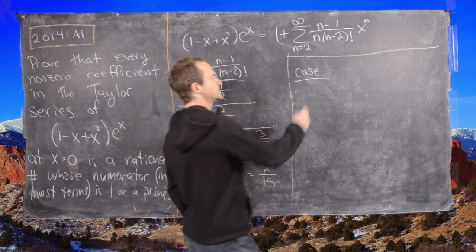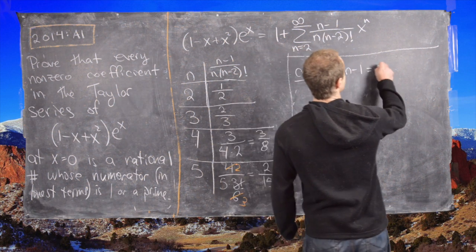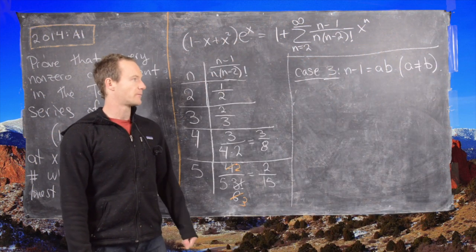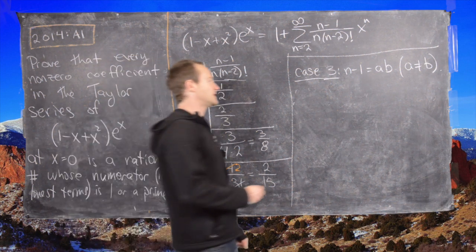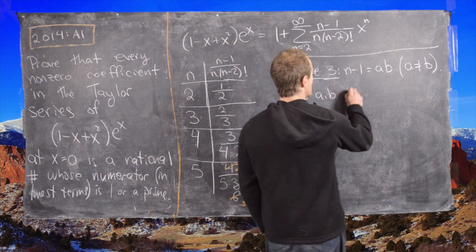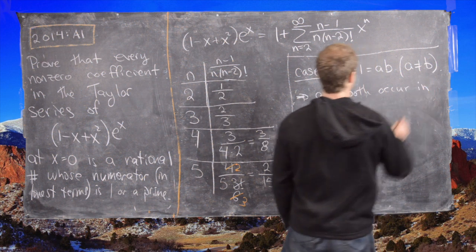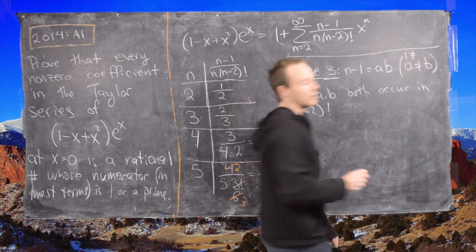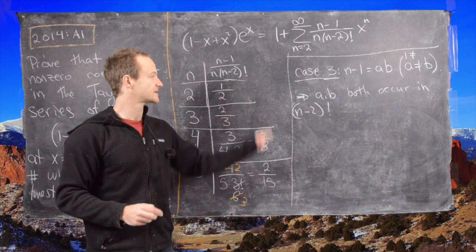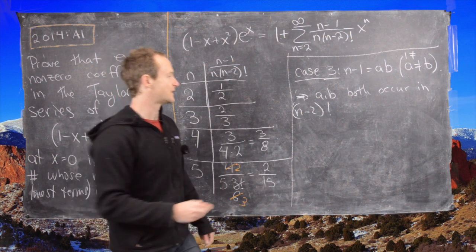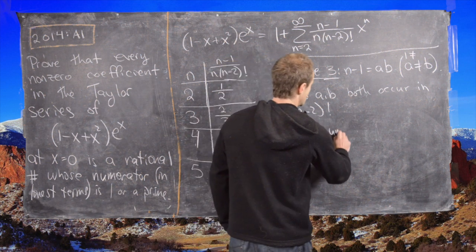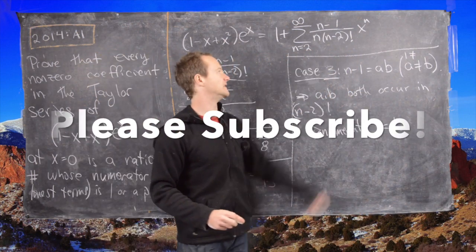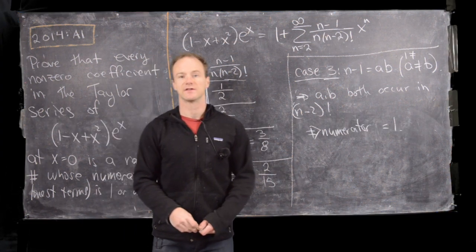Case 3: n minus 1 equals a times b, where a is not equal to b, and neither a nor b equals 1 — that is, n-1 is not a prime square. This case is actually the easiest, because both a and b occur in (n-2) factorial. Therefore the numerator cancels all the way down to 1, since both factors of n-1 appear in (n-2) factorial and cancel completely. That's the end of the solution to this problem.